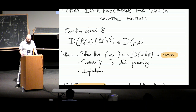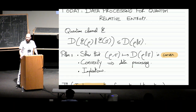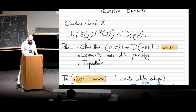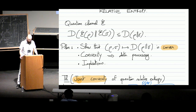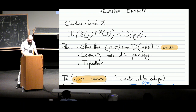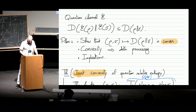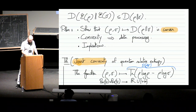I present a proof that is relatively generic, allowing you to go from convexity to data processing. Once we do that, the third point will be to explore implications — namely, we'll discuss strong sub-additivity, which is maybe one of the main implications. It's a fundamental inequality on the von Neumann entropy. So let's start with the first point and state it as a theorem.